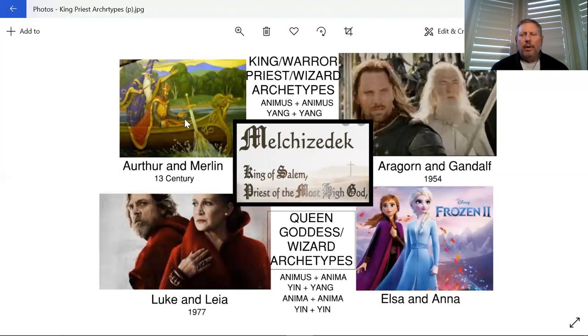This sword has archetypical meanings also, the sword of truth and so on. What I'm showing here is we have this idea of the king and warrior. Arthur is also a warrior. And the priest or wizard, which is Merlin, he's actually a Druid priest.